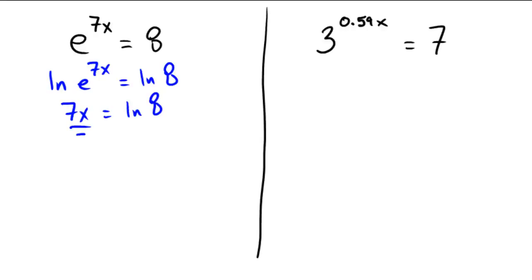And that means that x would be equal to ln of 8 over 7. Again, as a calculator answer, if you desire or you want to play along and see if you're doing your calculator correctly, this would be 0.2971 to 4 decimal places.